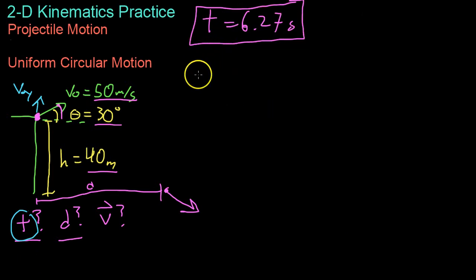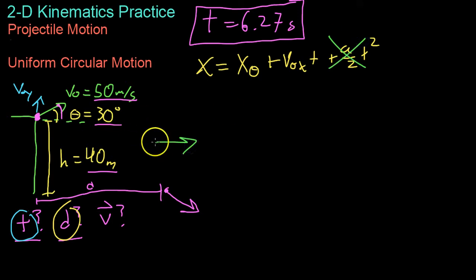Now we can use this time later on to find how far it went as well as its velocity. Now having solved for the time, we can now use that to find the total distance covered by the projectile. And we do that by, because this distance is only acting in the x direction, we use our x equation to find that distance. And our x equation is x0 plus v0x times time plus acceleration over 2 times t squared.